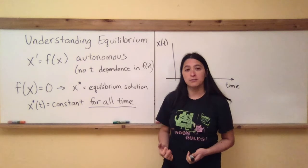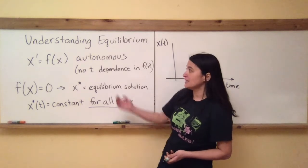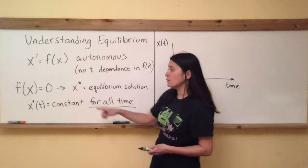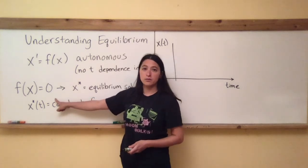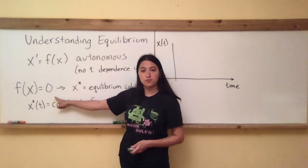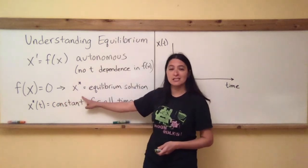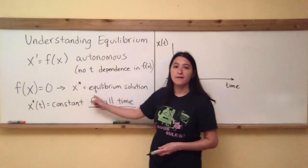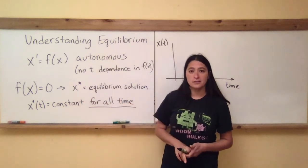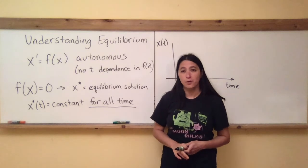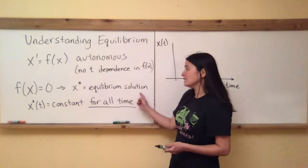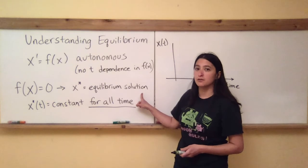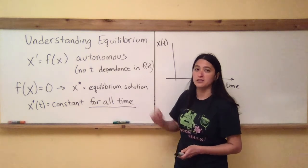What we know about equilibrium points is that we take the right-hand side of the differential equation, the function f of x, and we set it equal to zero. When we solve for the roots of f of x, this gives us special points — I'm going to denote them as x star — that are called equilibrium points. You want to think about them as equilibrium solutions because they are solutions to the differential equation.